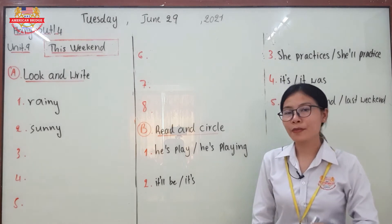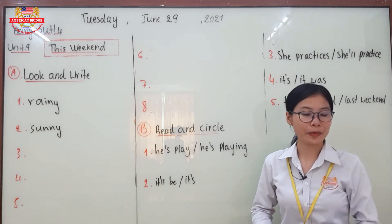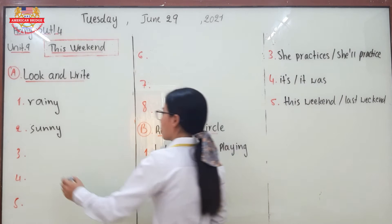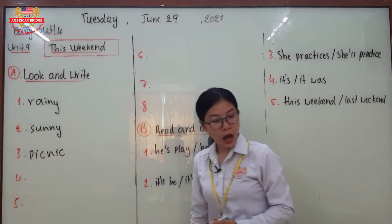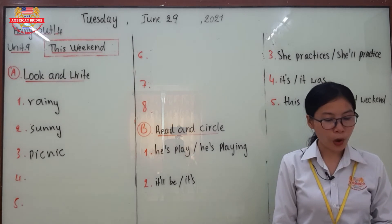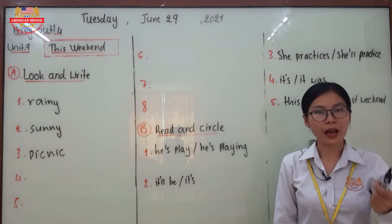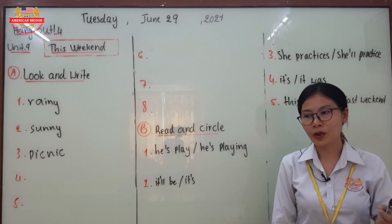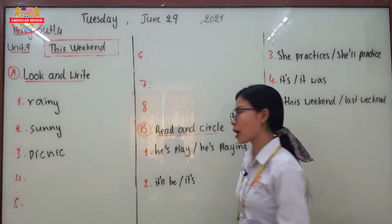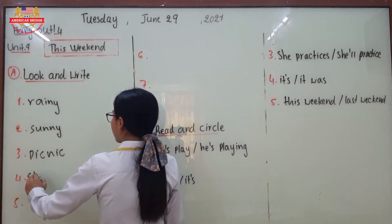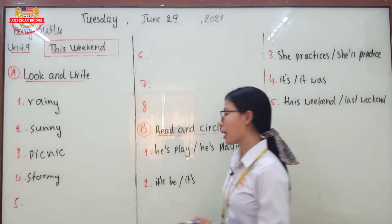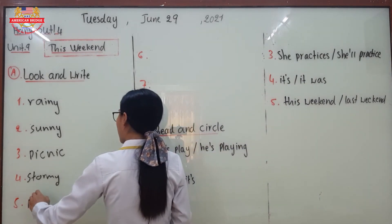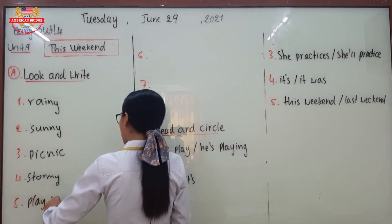Number four — when you see someone bringing something outside, it is the activity of having a picnic. Number five — you can see the sky is dark with lightning and wind, so this is the picture of stormy weather. Number six should be playing in the yard.